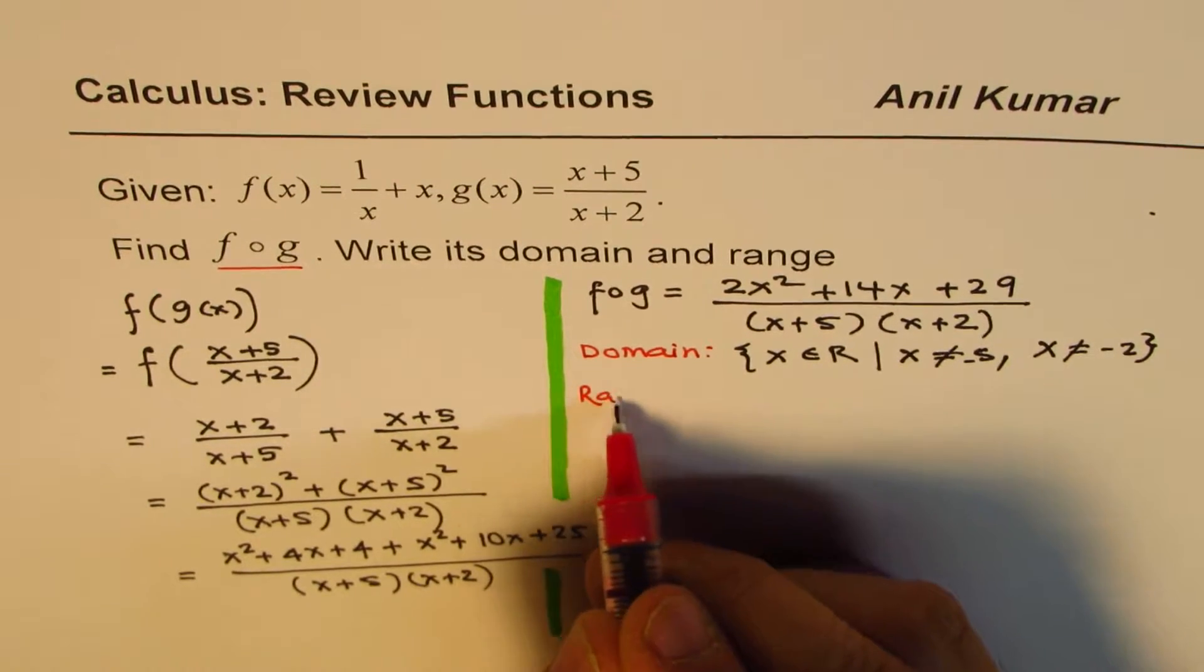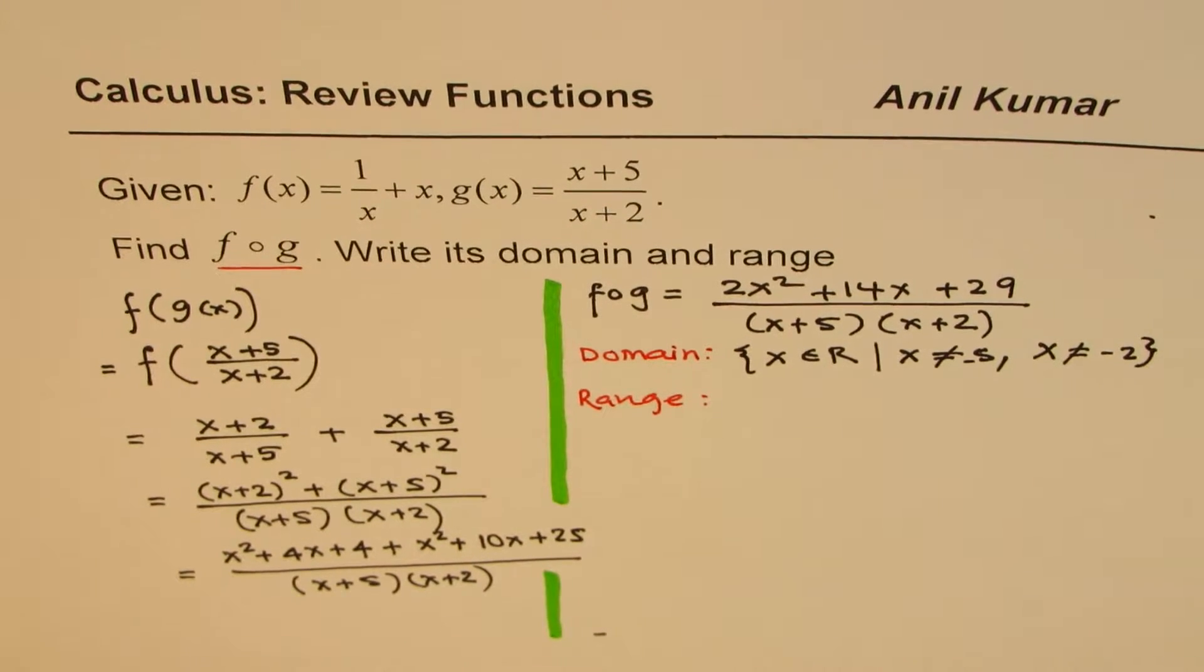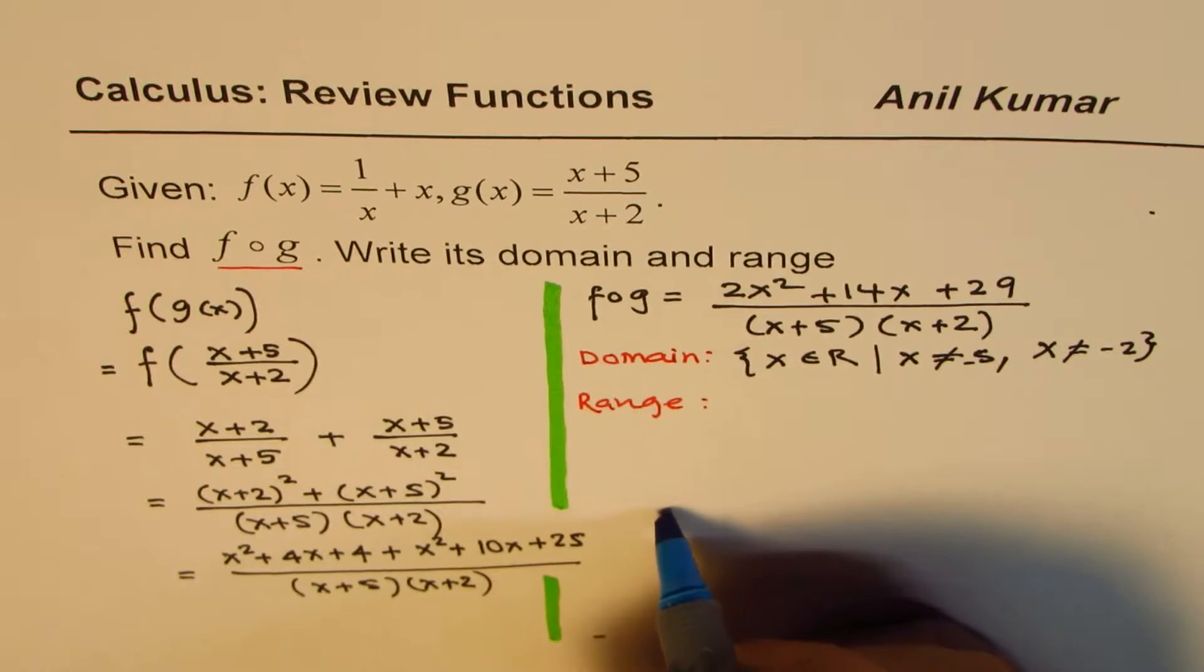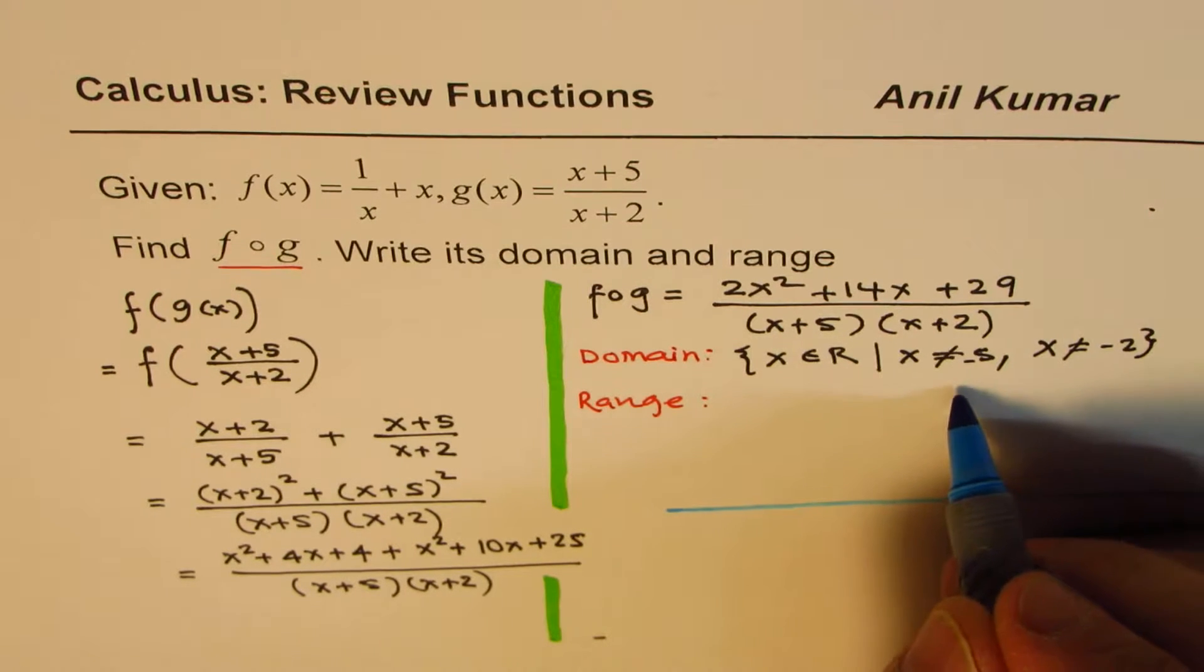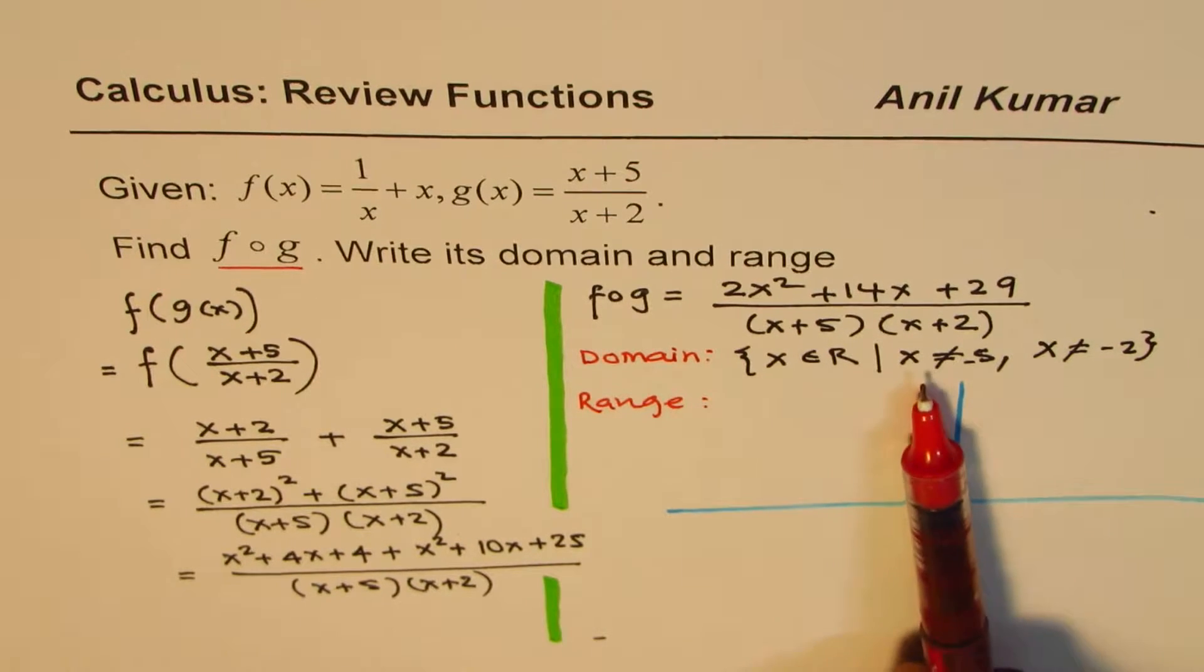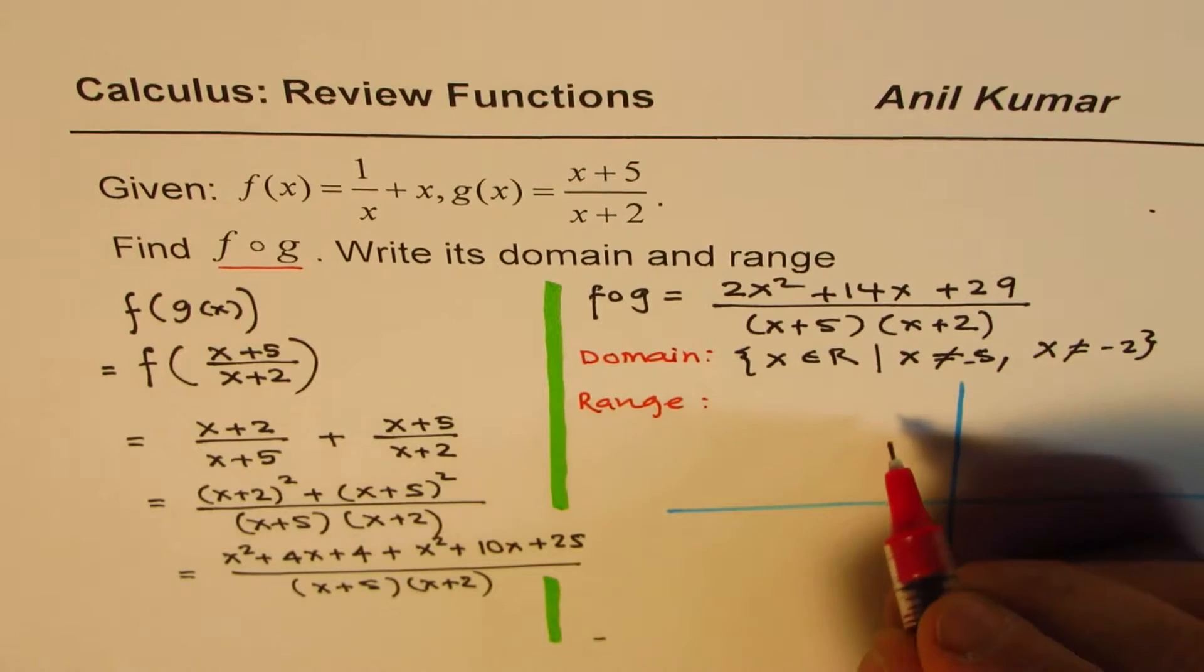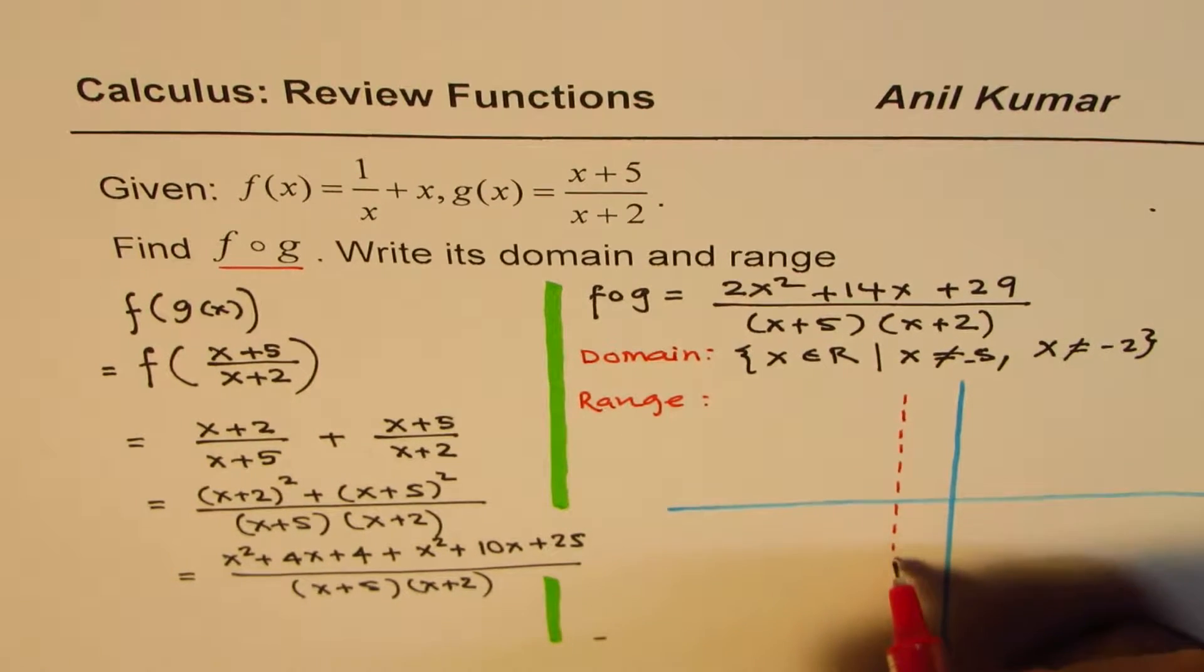It is difficult to get the range from the function at present, but what you can do is, with some knowledge, you can actually sketch. You may have to review sketching techniques for functions, but what I will do here is give you overall view. What we see here is that we have two restrictions, x equals to minus 5 and minus 2 will result into vertical asymptotes.